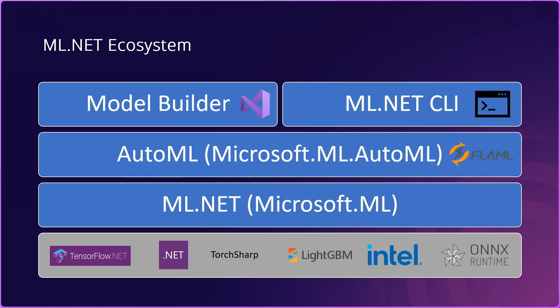You also have access to the ONNX Runtime, and if you are looking to inference ONNX models, ONNX Runtime can help you there. You also have acceleration libraries from providers like Intel, such as MKL and the Intel OneDNN set of libraries. If you're training classical machine learning models, you can use the LightGBM library for things like regression and classification, as well as some custom implementations of popular machine learning algorithms.